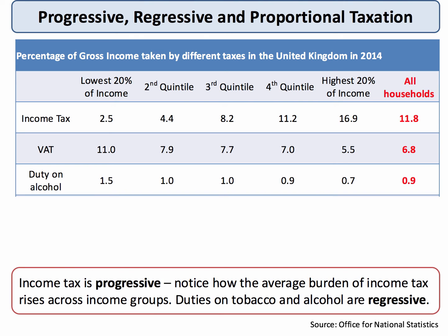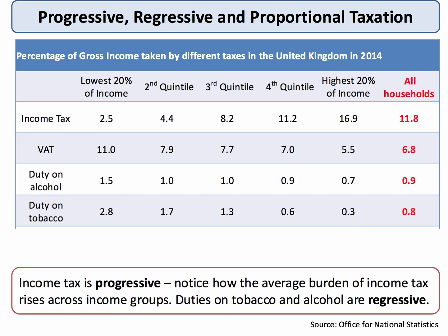What about the duty on alcohol, beer and spirits? It takes around 1% of the income of all households, but the percentage taken from the lowest quintile — the poorest fifth — is more than twice that of the highest. So alcohol taxes tend to be slightly regressive, affecting poorer families more. Tobacco is even more pronounced: just under 1% of gross income for all households, but 0.3% for the most well-off 20%, compared to 2.8% for the lowest quintile and 1.7% for the next quintile. Tobacco taxes are clearly regressive.